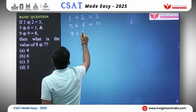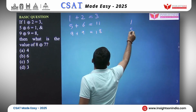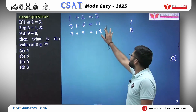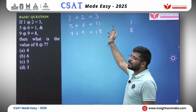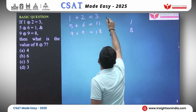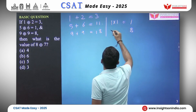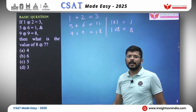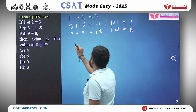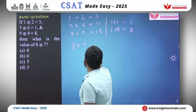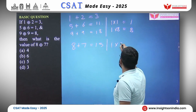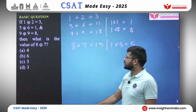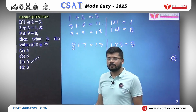9 plus 9 is 18 but we have 8. From our knowledge of the previous problem we can guess: there they added the digits, here they are multiplying the digits. 1 into 1 equals 1, and 1 into 8 equals 8. For 8 plus 7 that is 15, and 1 into 5 equals 5. So the answer is option C, 5.